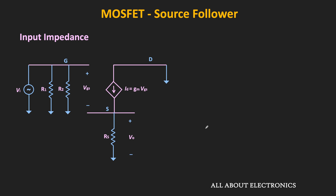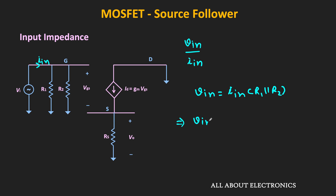Let us start with the input impedance. The input impedance is the ratio of the input voltage to the input current. Since the gate acts as an open circuit at low frequencies, this current Iin will flow through resistors R1 and R2. That means Vin equals Iin times R1 parallel R2, or the input impedance Vin divided by Iin is equal to the parallel combination of R1 and R2. Without these biasing resistors, the input impedance of the MOSFET is ideally infinite, but because of R1 and R2, the input resistance will be finite. To get large input impedance, the value of R1 and R2 should be as high as possible, and typically their value is in megaohms.